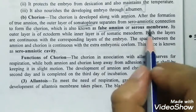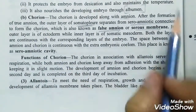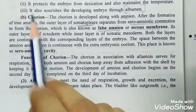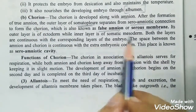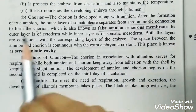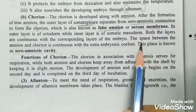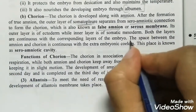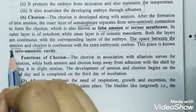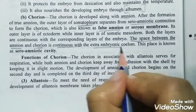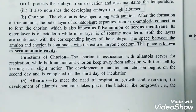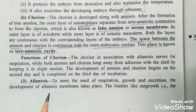Chorion is also called false amnion or serous membrane. The outer layer is somatic mesoderm. The space between amnion and chorion is continuous with the extra-embryonic coelom, and this space is called the sero-amniotic cavity.